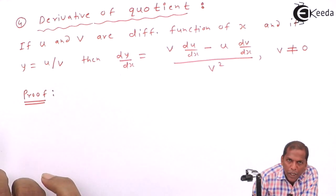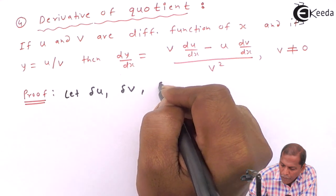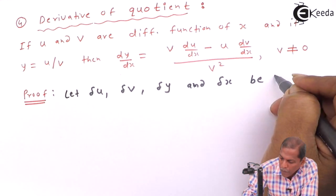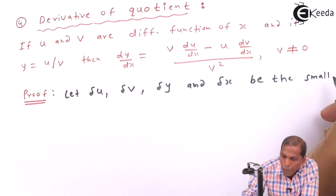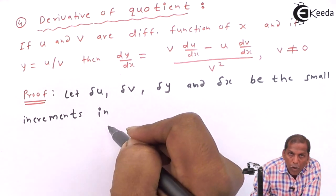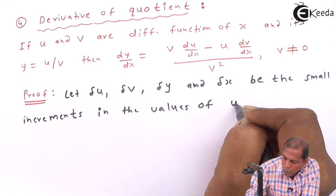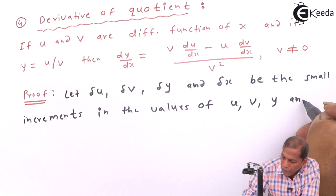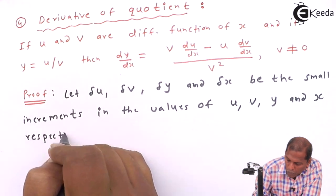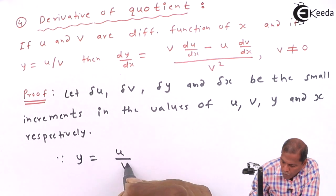Now let's see the proof. First of all, let delta u, delta v, delta y, and delta x be small increments in the values of u, v, y, and x respectively. Since y is equal to u upon v,